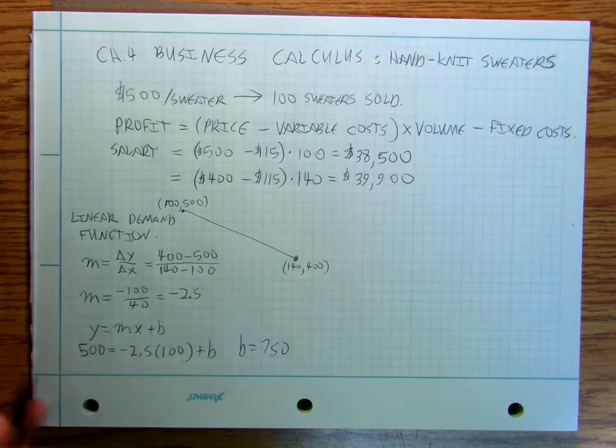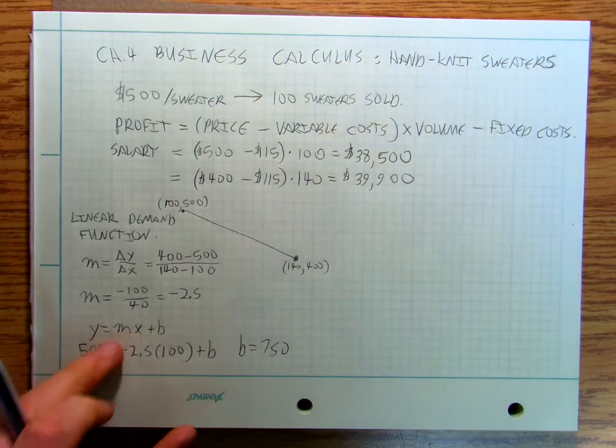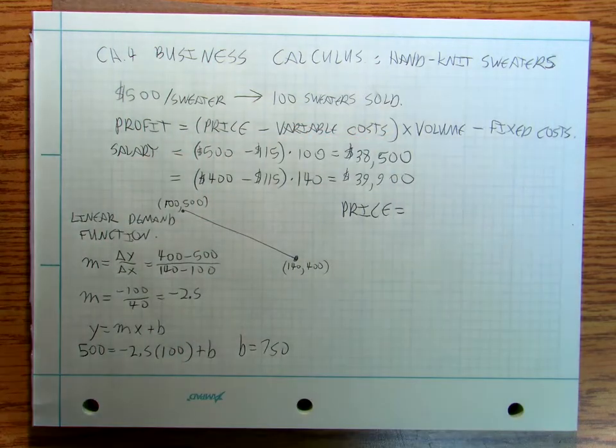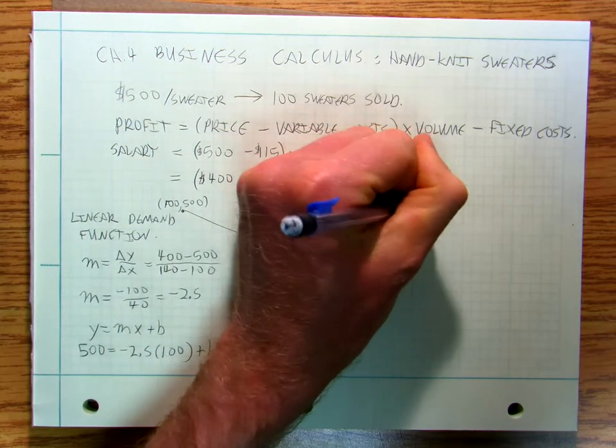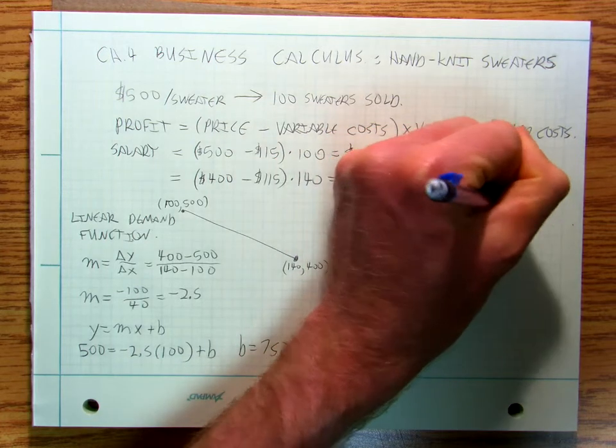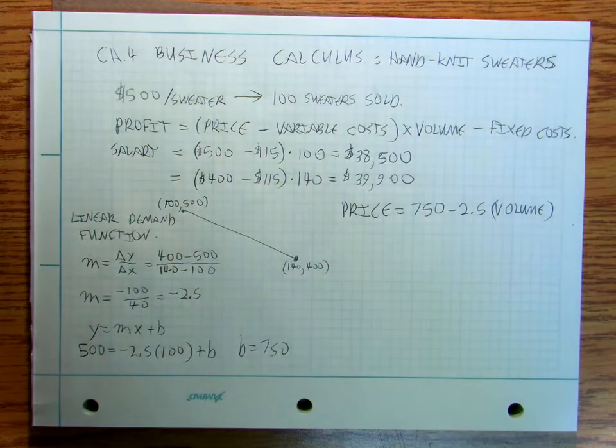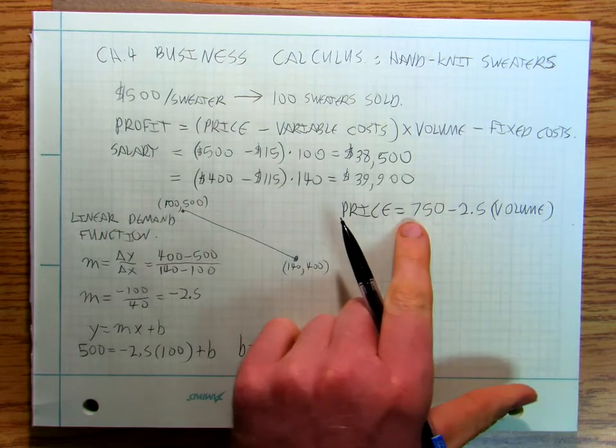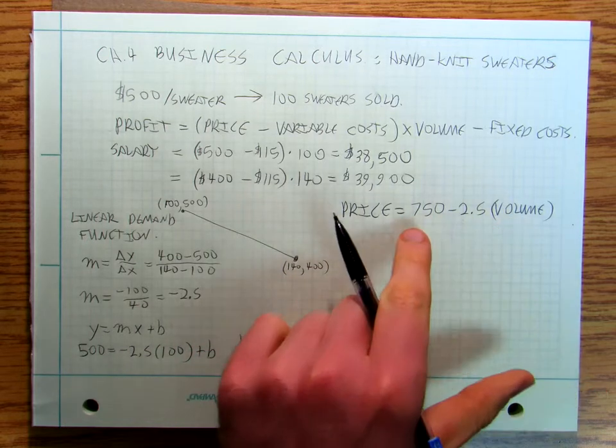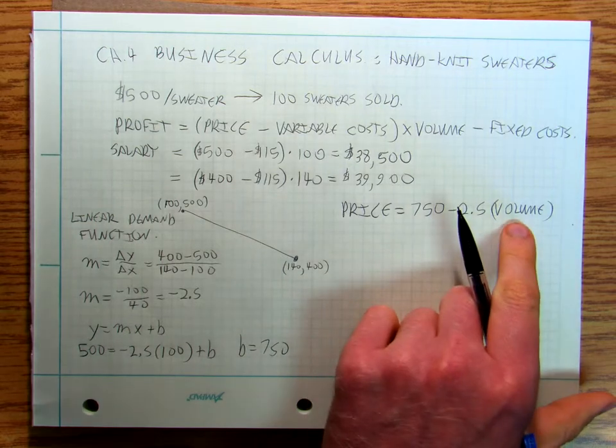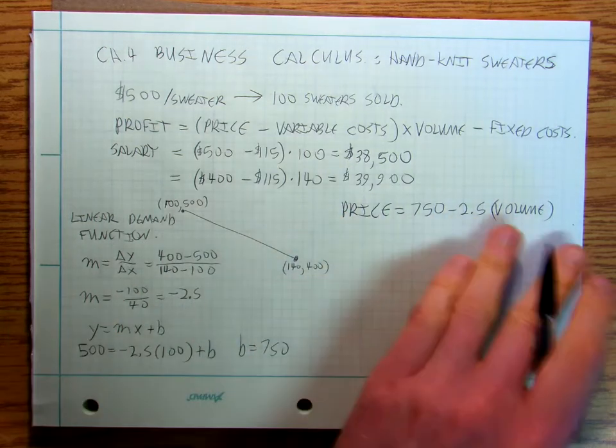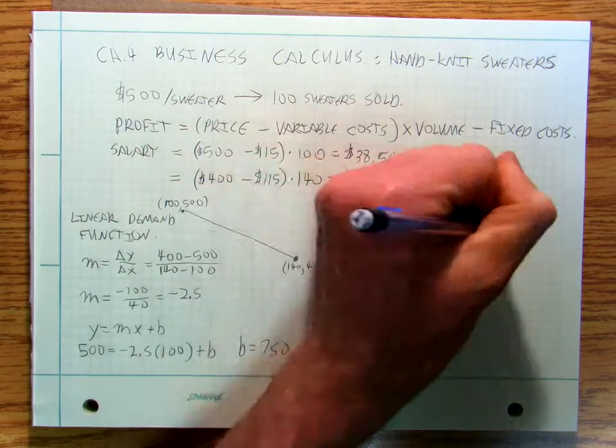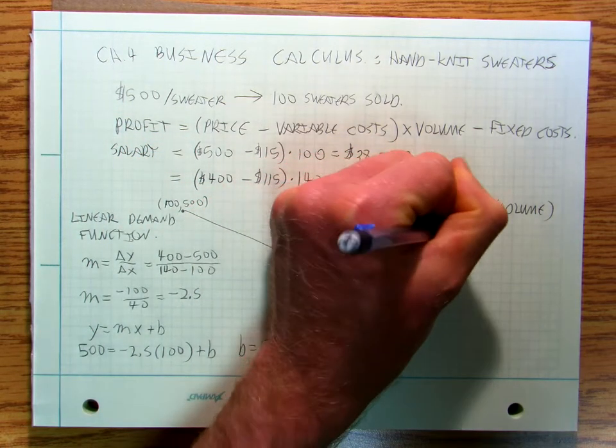So I'm going to say that my price is going to be 750 minus 2.5 times volume. Think about that one for a little bit, that if I have a volume of 100 I can sell 100 at $500. I can sell 140 at $400. So this is, there's other ways to write this, this is the way I'm going to write it. So now let's call this P, let's call that 750 minus 2.5V.